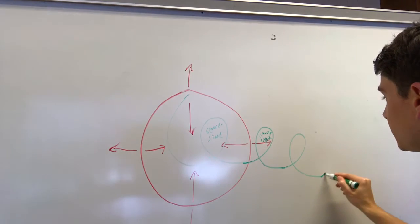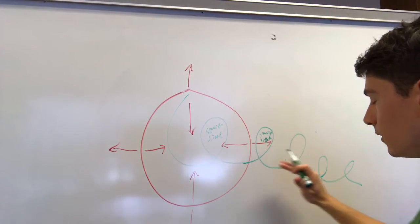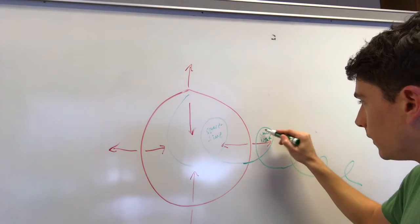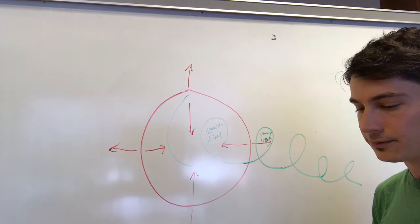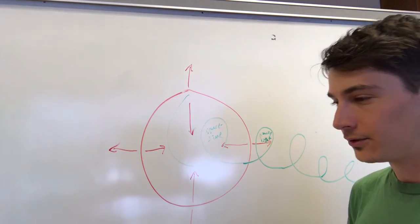And this process of what Schelling refers to as recapitulation continues through a series of stages. And within gravity and light here, Schelling will also describe the emergence of magnetism, electricity, and chemistry.